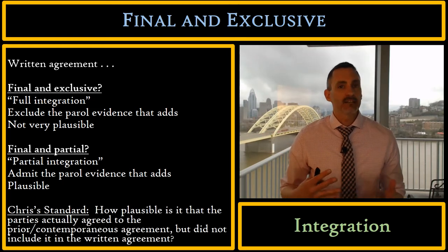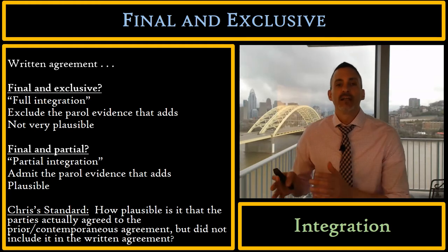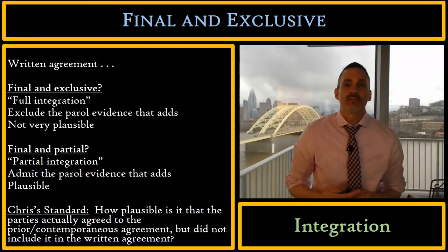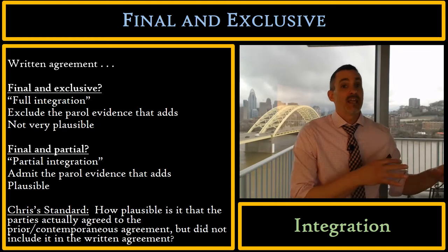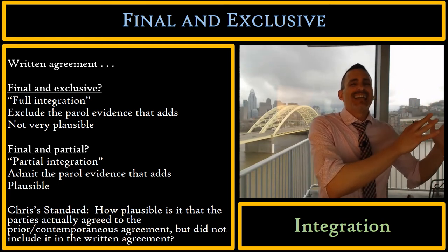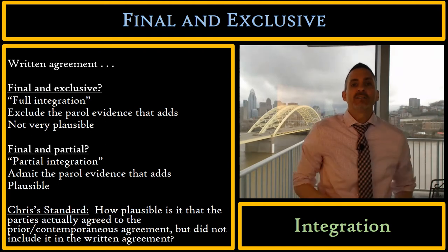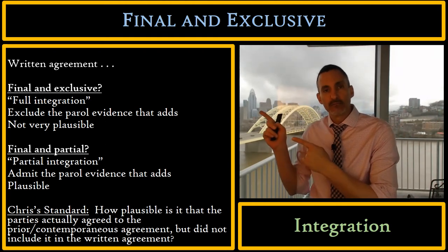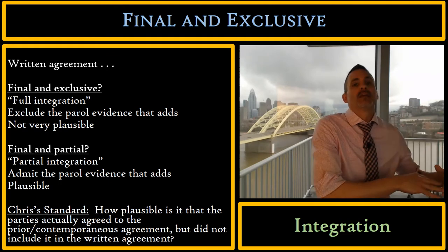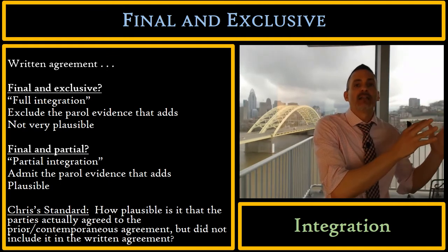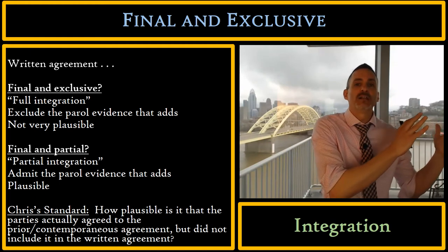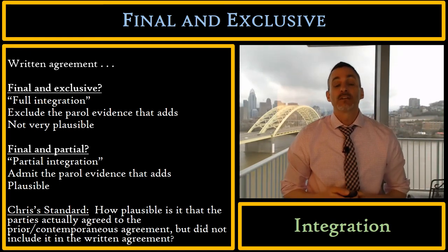The Parole Evidence Rule focuses on whether the written agreement was final and exclusive or final and partial — this is the integration test. If the written agreement is final and exclusive, we call that a full integration; we'll exclude Parole Evidence that adds to it. If the written agreement is final and partial, we call that a partial integration, and we will admit the Parole Evidence that adds to it. This is essentially the same as the plausibility test: if fully integrated, it's highly unlikely the parties actually agreed to that parole agreement. If partial, it is plausible they agreed to it and didn't include it in the written agreement — in that case, we'll allow the jury to consider it.